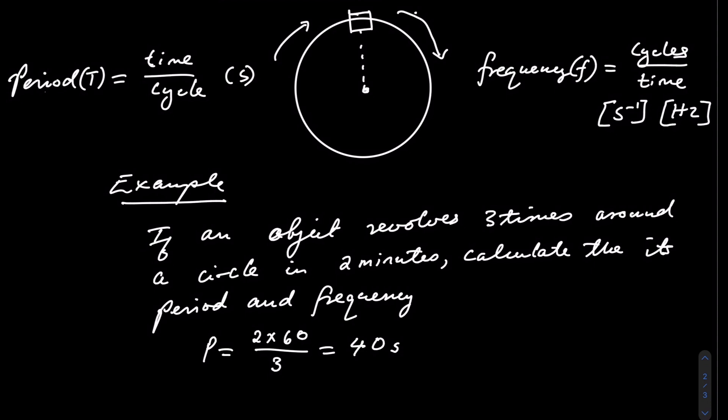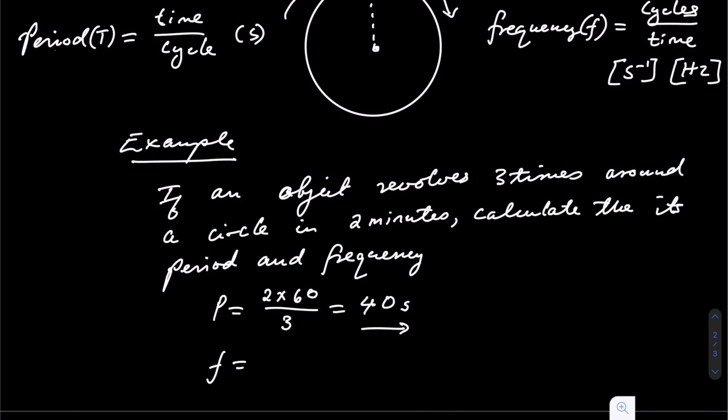The frequency is the reciprocal of the period. The number of cycles, which is three, divided by the time it took to complete those cycles, which is basically two times 60 seconds. 0.025 Hz.